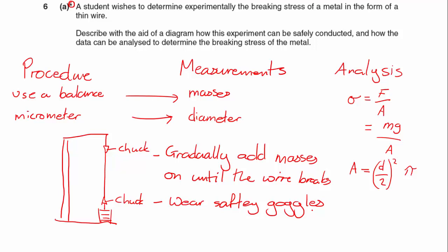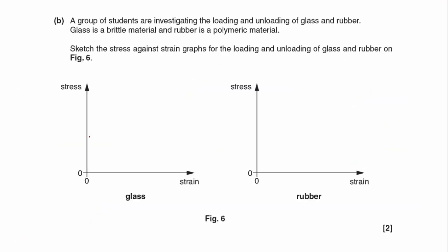I would say that's probably going to get us a lot of the marks, if not all six, certainly probably going to get five. But just by using this procedure, measurements, and analysis technique, I guarantee you're going to get into at least the three and four zone. Okay, moving on then.